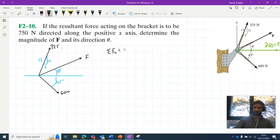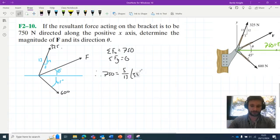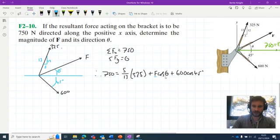We can therefore say that the sum of the forces in the x are equal to 750 and that the sum of the forces in the y are equal to zero, right? Because the resultant force doesn't have any up or down component. We can say then that 750 is equal to all of the horizontal components added together. So that would be 5 thirteenths of 325 plus F cos theta plus 600 cos 45. Is this solvable? No, evidently not, since we have two unknowns: F and theta here.